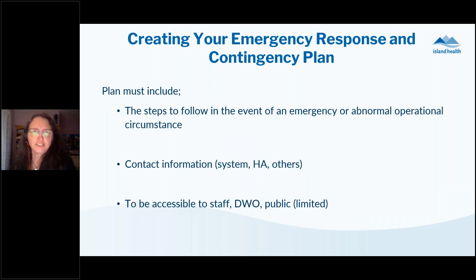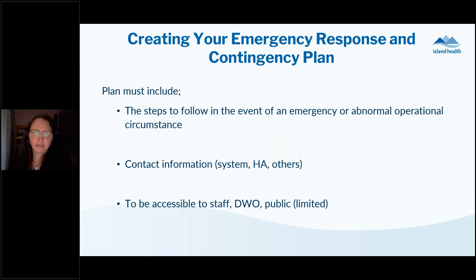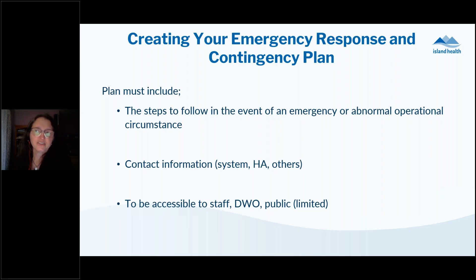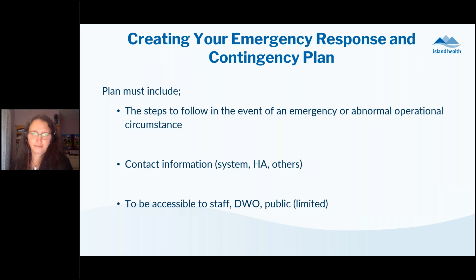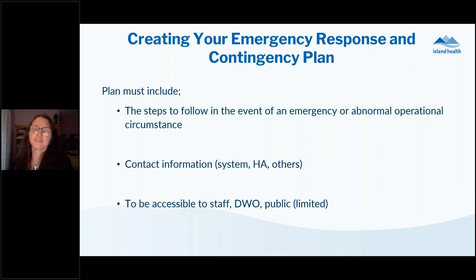In creating an emergency response and contingency plan, the plan must include the steps to follow in the event of an emergency or abnormal operation circumstance. Every water system is a little bit different, so it's really important that the plan be specific to your drinking water system. It needs to include all internal system contact information, the health authority, and any other agencies that need to be informed of challenges. It also has to be accessible to staff, the drinking water officer, and the public — while not exposing sensitive information on a public platform.